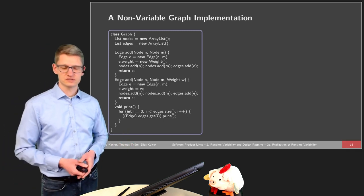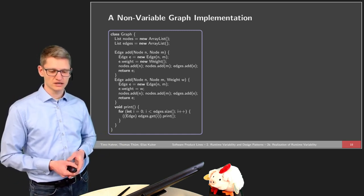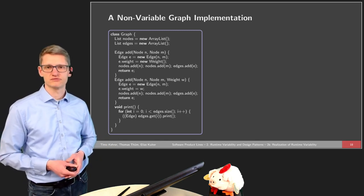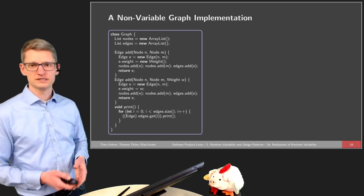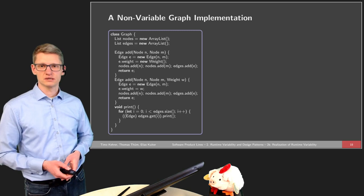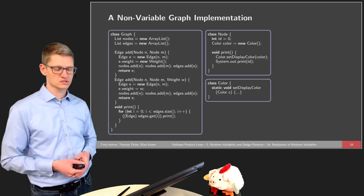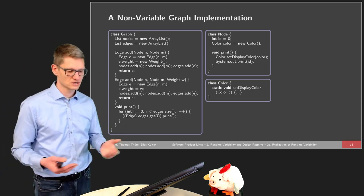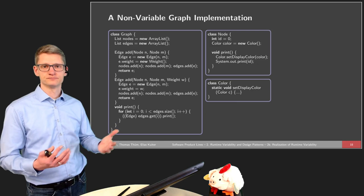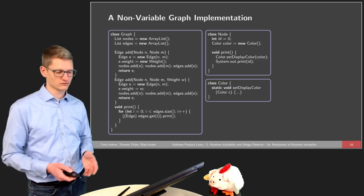We might have a graph and the graph consists of nodes and edges. We have a list of those and certain operations on a graph. We can add an edge between two nodes n and m, or add an edge and also specify a certain weight for that edge. We might be able to print out the whole graph on the command line or by means of a graphical user interface. For nodes, those nodes have a certain ID and a certain color to express the coloring of nodes. When we print out those nodes, we might need to set the display color, either on a GUI or on the command line.